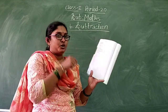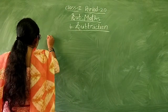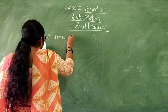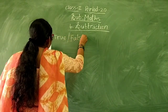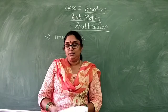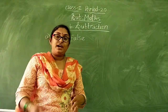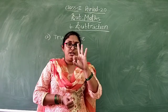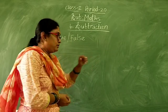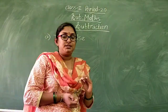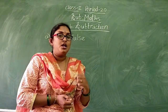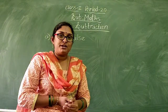They have given tick true or false. The question is: number of subtraction families of 4 is 3. So we have to verify whether the subtraction family of 4 is 3 or not. Now I will tell you the subtraction family of 4. Subtraction family of 4 means how many subtractions we can do by using the number 4.